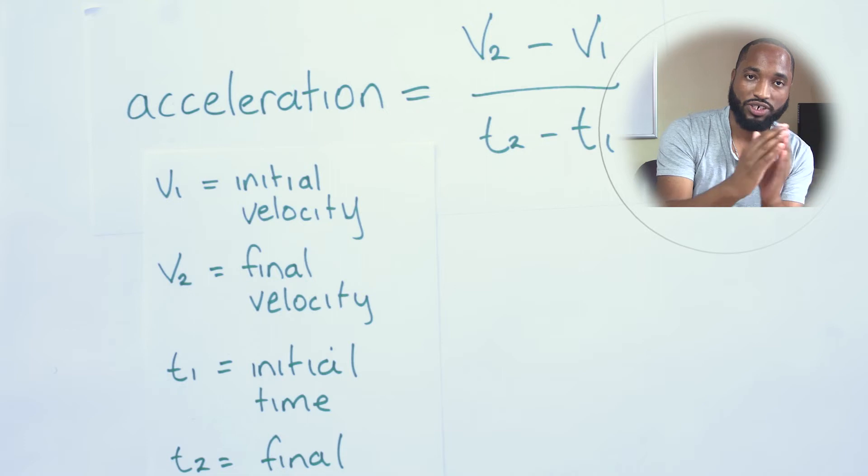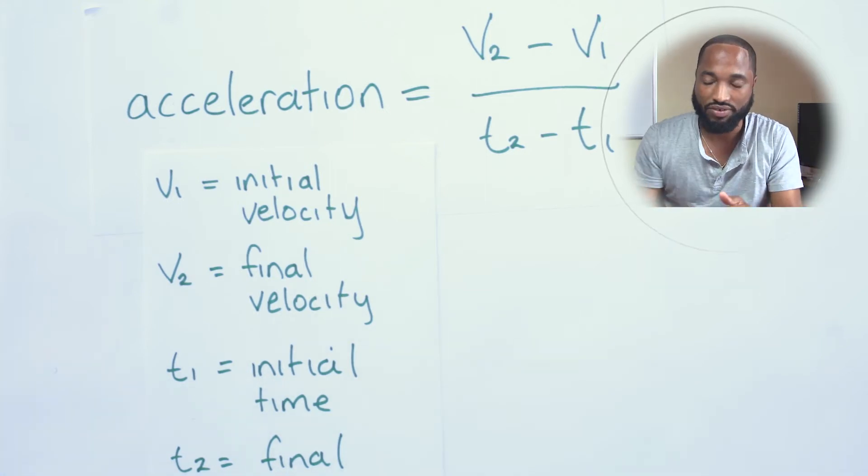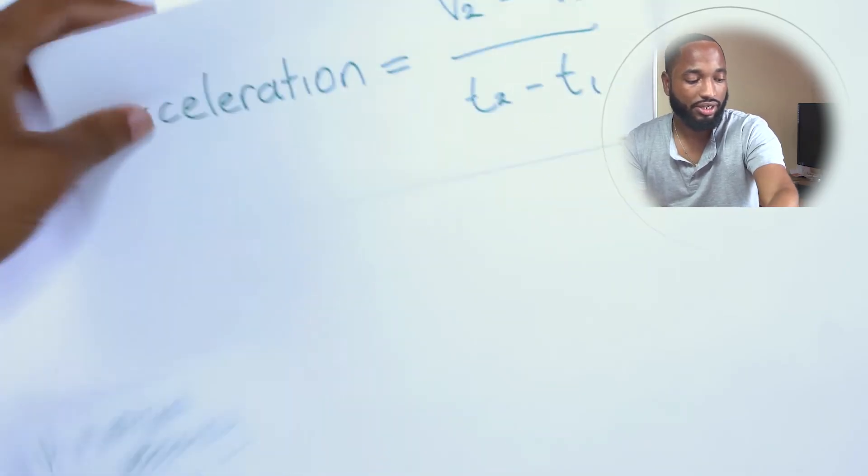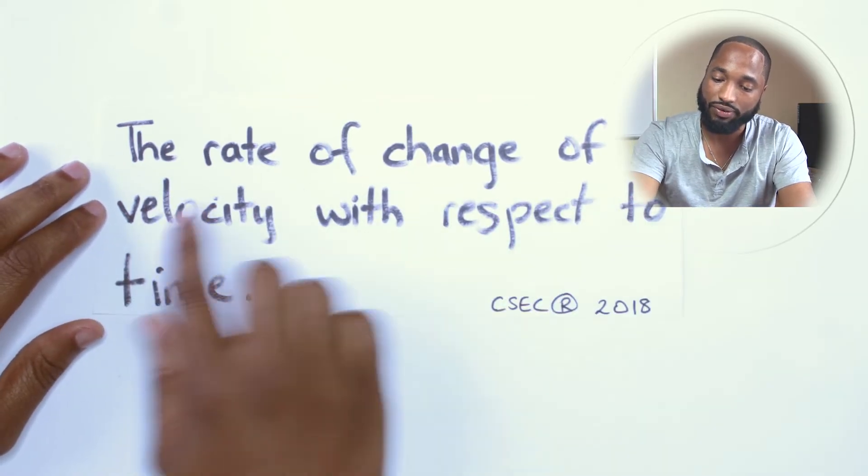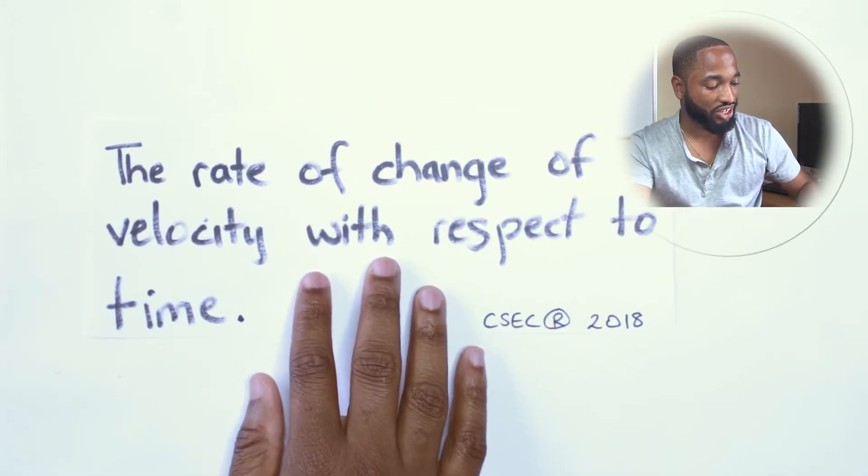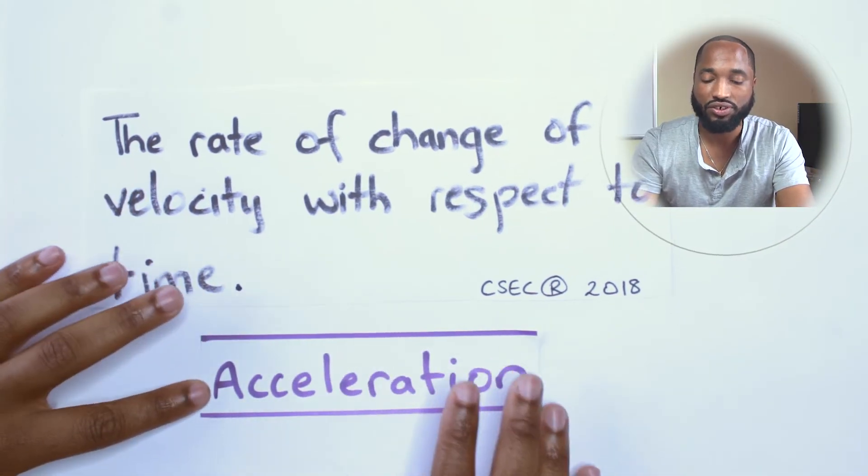Acceleration is how much the velocity changed and how long did it take to change—divide those two values. So essentially, CXC wants you to know this definition: the rate of change of velocity with respect to time. This is the definition for acceleration.